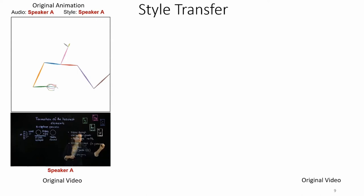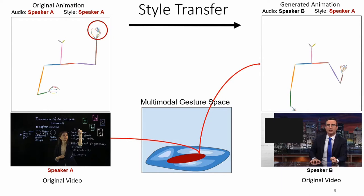For example, let's look at speaker A. Make note of the raised left arm, which is the part of a style. We map this style to a learned multimodal gesture space, which can then generate gestures with the audio of speaker B, but with speaker A's style.